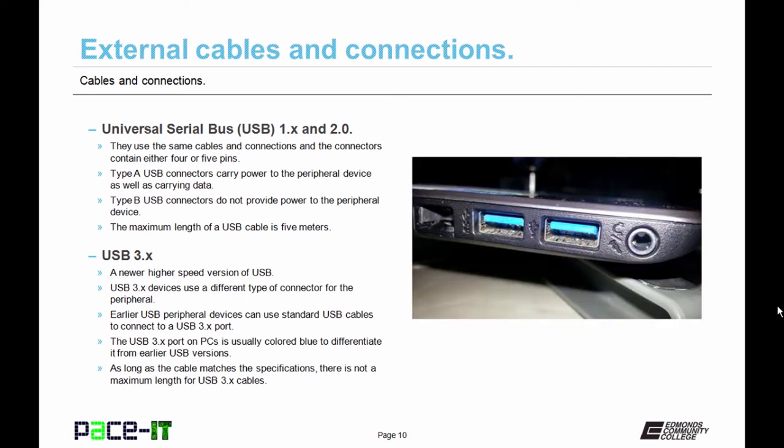So now let's talk about USB 3. It's a newer higher speed version of the universal serial bus. USB 3 devices use a different type of connector for peripherals. They're specific to USB 3. Earlier USB peripheral devices can use standard USB cables to connect to a USB 3 port on the PC. The USB 3 port on the PC is usually colored blue to differentiate it from earlier versions of USB. Now as long as the cable matches the electrical specification there is not a maximum length for USB 3 cables.